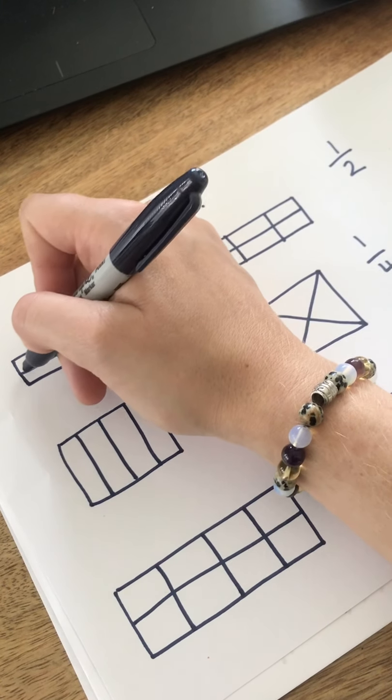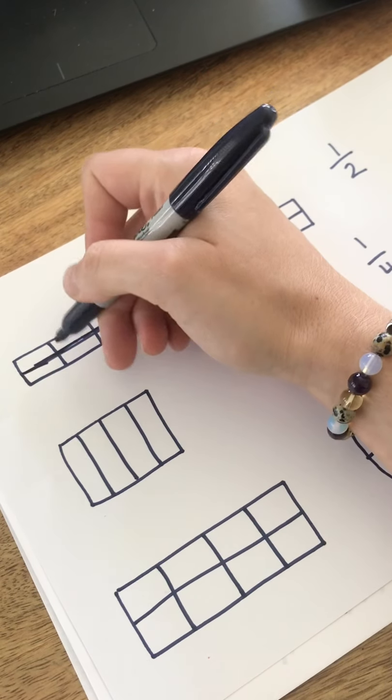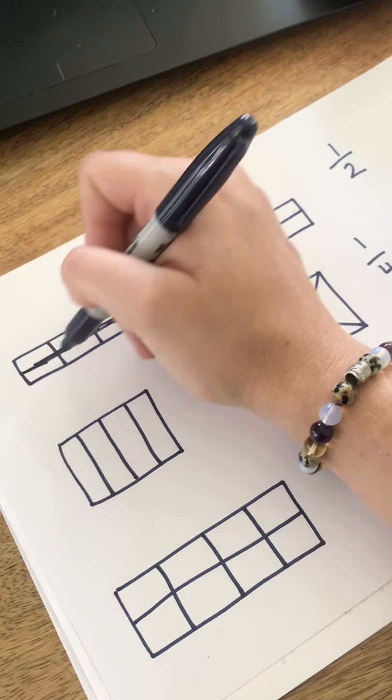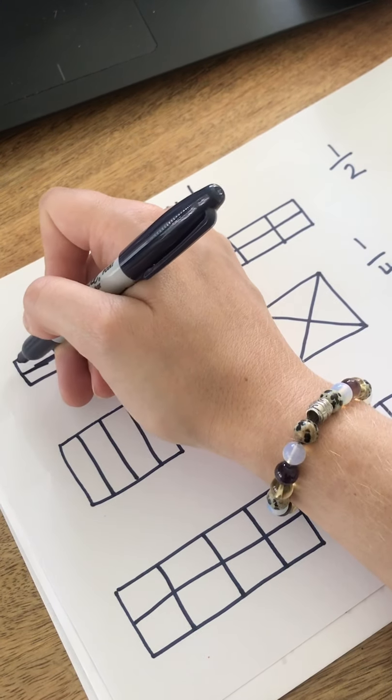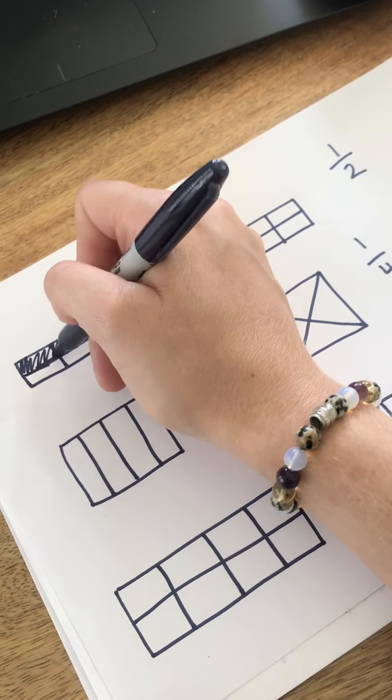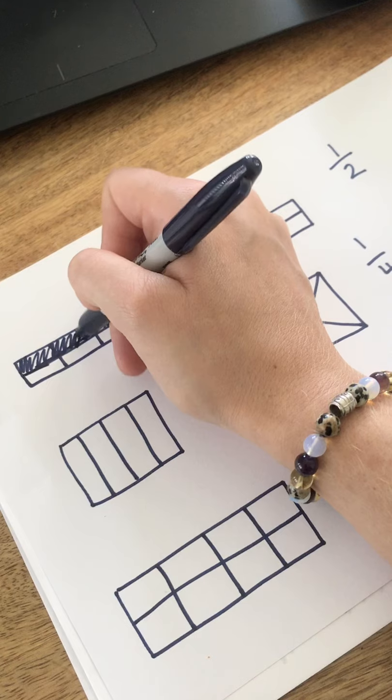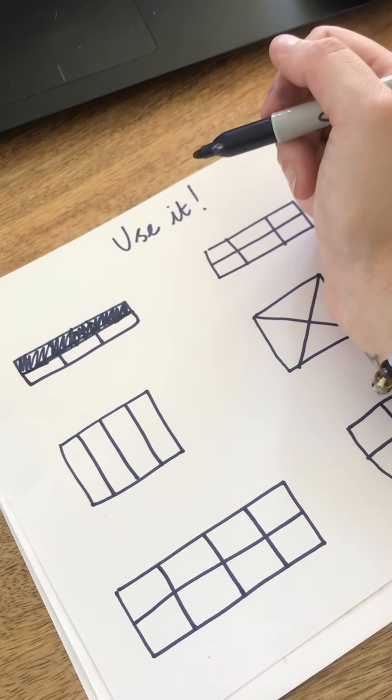But if I make this little line darker and I ignore those two lines there, if I look at the whole shape and I make that line darker, I've actually split the shape into half. So I can colour in all of this bit along here and I've made the shape into two equal parts and I've coloured in half.